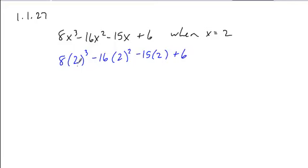2 cubed is 8. 8 times 8 is 64. 2 squared is 4. 4 times 16 is 64.